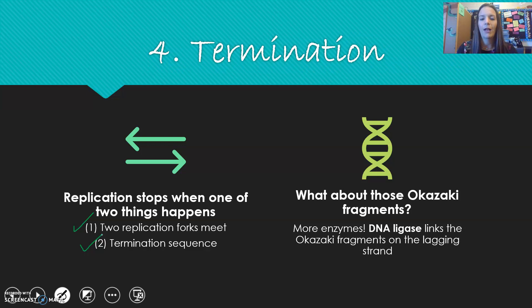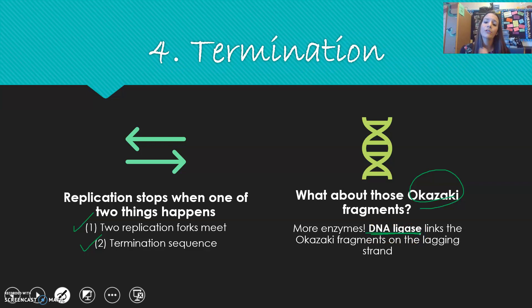We still have a little problem: what about all those fragments? You can't have fragments of DNA — you need one continuous strand. So another enzyme, DNA ligase, goes through and links those fragments together to create one continuous strand.